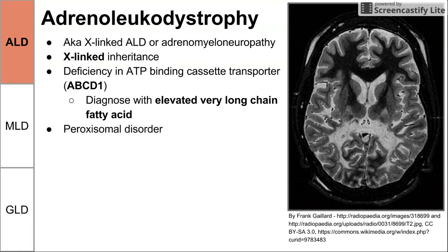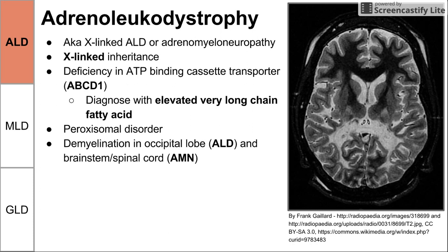It's a peroxisomal disorder, as opposed to the others we're discussing, which are lysosomal storage diseases. One difference between the names ALD and AMN — adrenoleukodystrophy and adrenomyeloneuropathy — is that they describe different locations where the disorder can occur. If demyelination occurs in the occipital lobe, it's referred to as ALD. If it occurs in the brainstem or spinal cord, it's referred to as AMN.